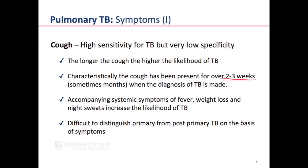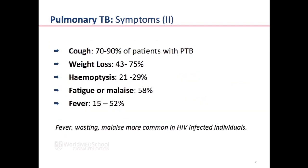It is difficult to distinguish primary from post-primary TB on the basis of symptoms alone. To summarise key symptoms of pulmonary TB: cough occurs in about 70–90% of patients, weight loss in up to 75%, hemoptysis in up to 30%, fatigue or malaise in up to 60%, and fever in up to half of patients. Fever, wasting, and malaise tend to be considerably more common in patients who are HIV-infected.